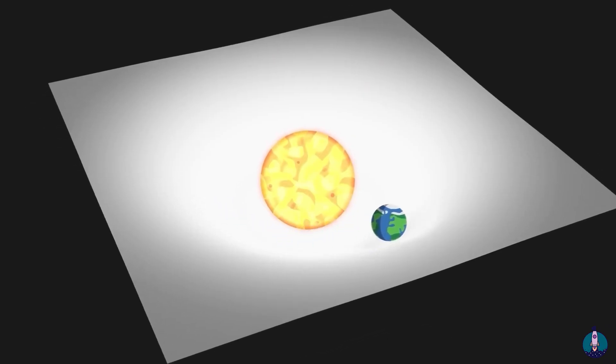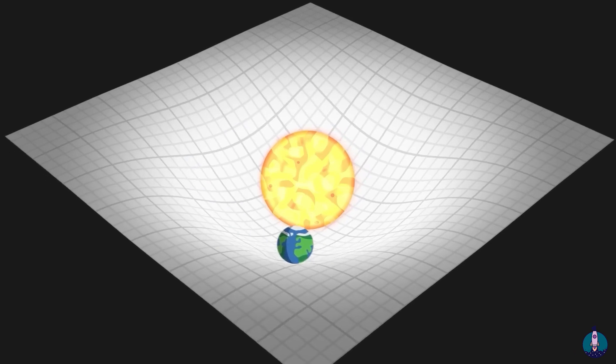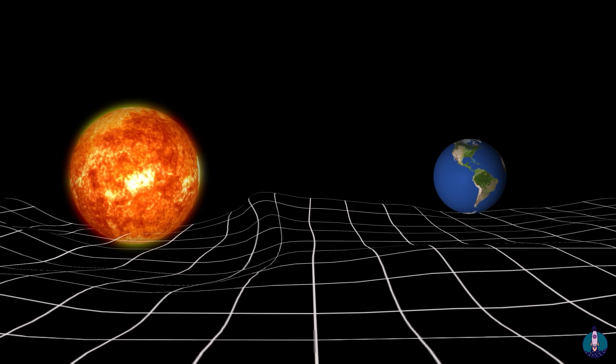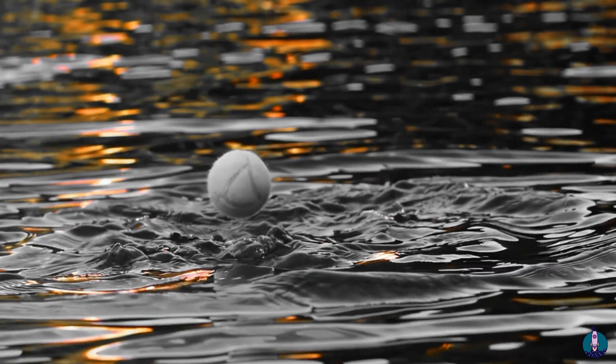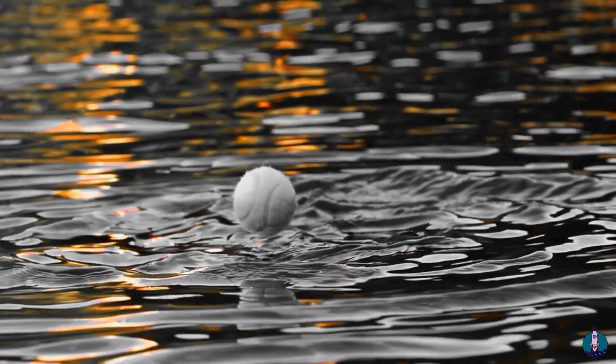How can the sun and earth attract each other without touching or using anything in between? The secret lies in space and time. Both the earth and sun change the space and time around them, kind of like how a body in water distorts the surrounding water.